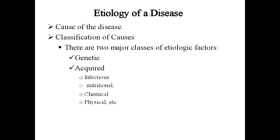Etiology refers to the cause of the disease. There are two major classes of etiological factors: genetic causes — inherited conditions; and acquired causes — nutritional, chemical, physical, etc.